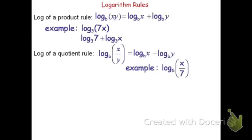Here's an example. Log base 5 of x over 7 can be rewritten. We can say this is log base 5 of x minus the log base 5 of 7. The piece that's subtracted will always be the denominator — the piece on the bottom of the division. The piece on the top, the numerator, is the piece that's positive. So it's the numerator minus the denominator.